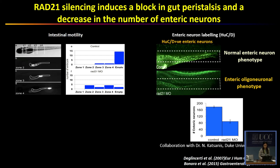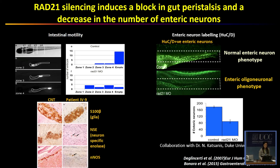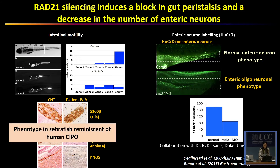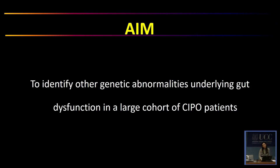So, put together, these two results suggest that the motility defect is due to a neurogenic reason. We also observed the same situation in the patient from the Turkish family. As you can see in the immunohistochemistry analysis, there is also a reduction in the number of enteric neurons in the patient compared to the control. So we can say that the phenotype in zebrafish is reminiscent of human CIPO.